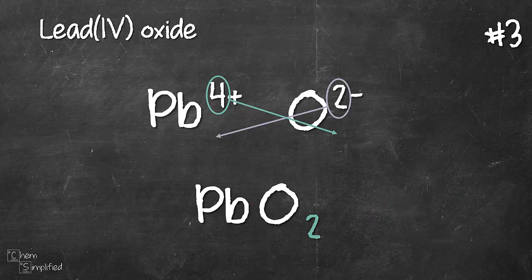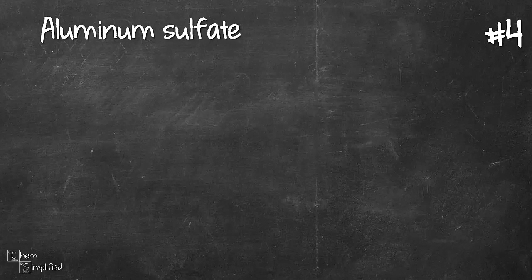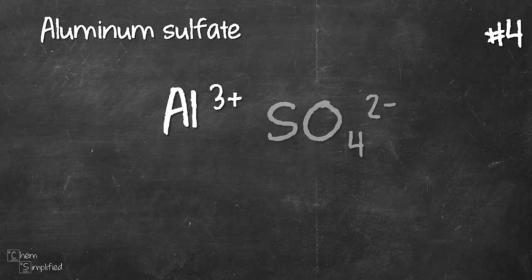All three examples that we've worked on involve monoatomic ions. The next two examples, I'm gonna show you how we use the crossover method involving polyatomic ions. So let's move on to our fourth example, aluminum sulfate. So aluminum is Al3+, sulfate is SO42-.